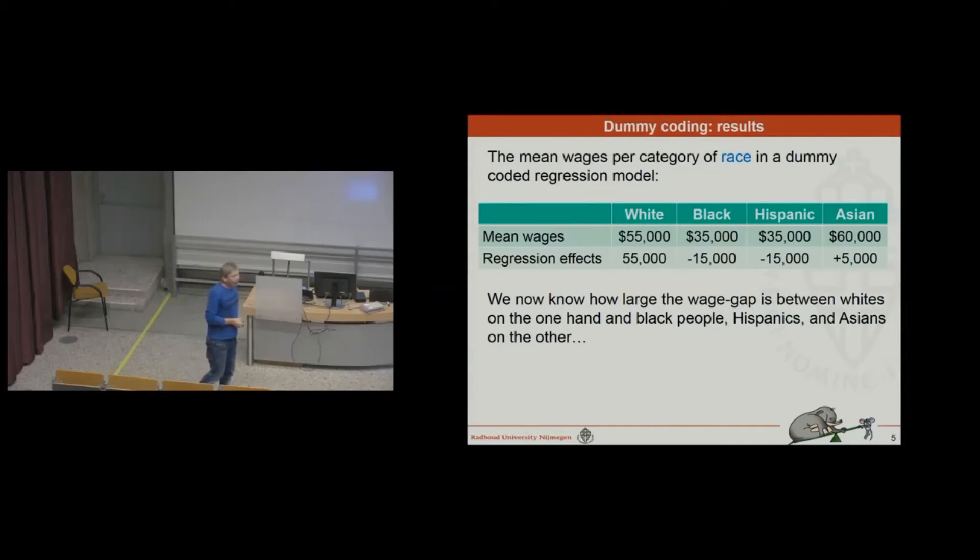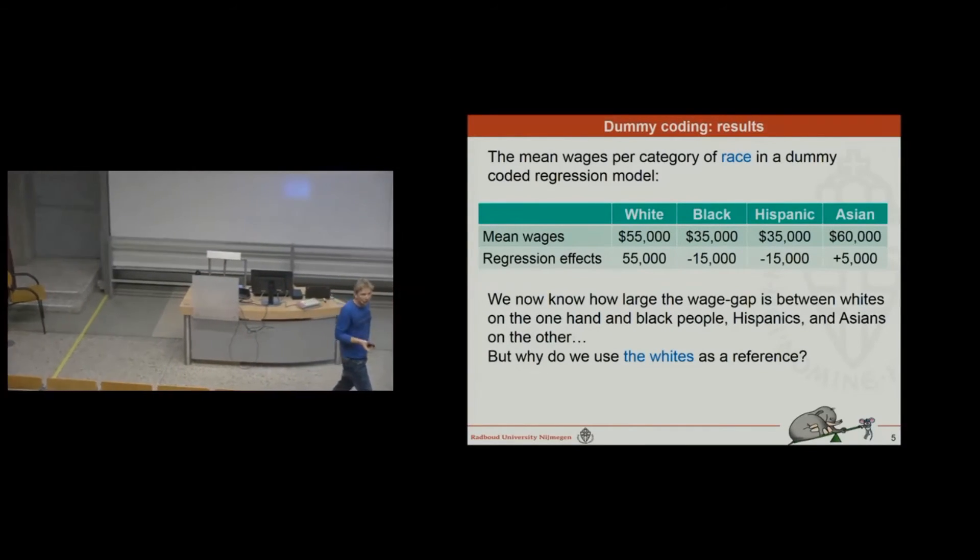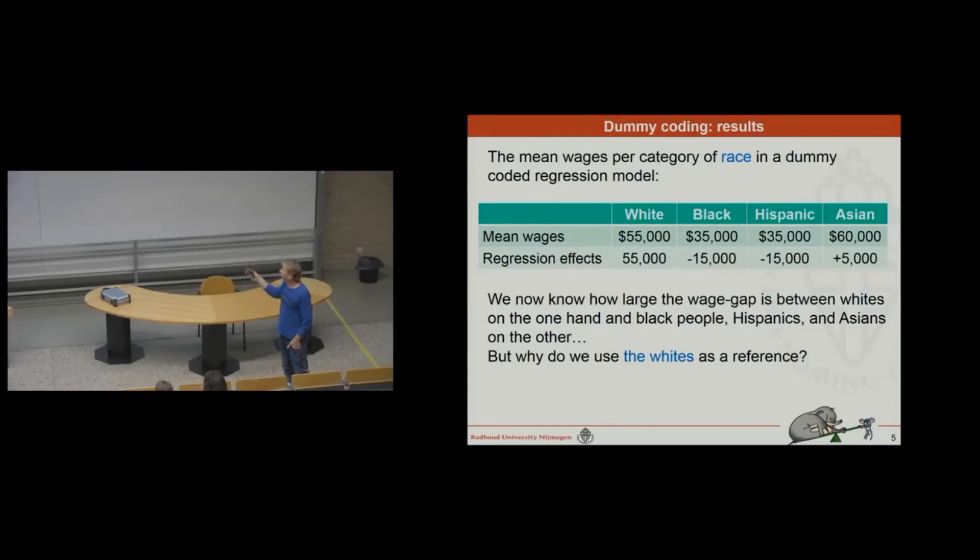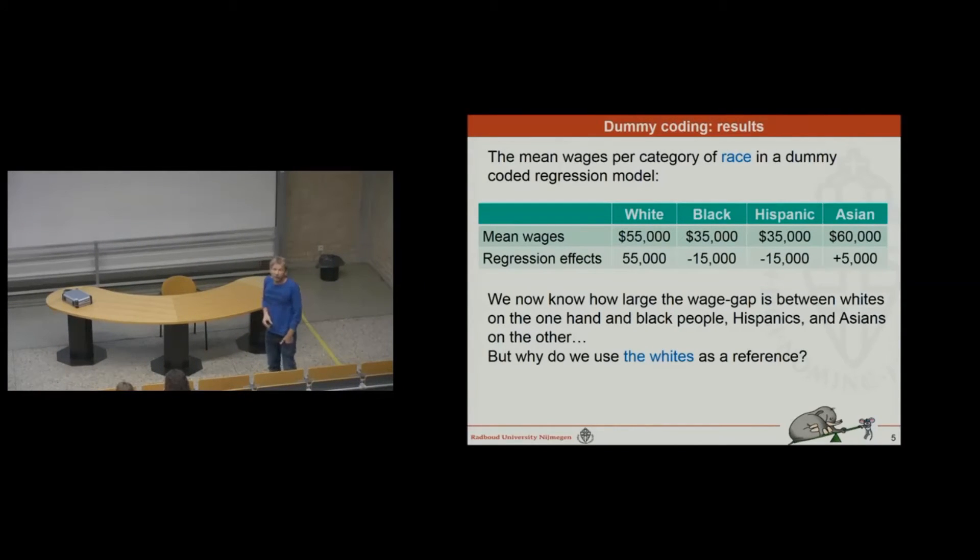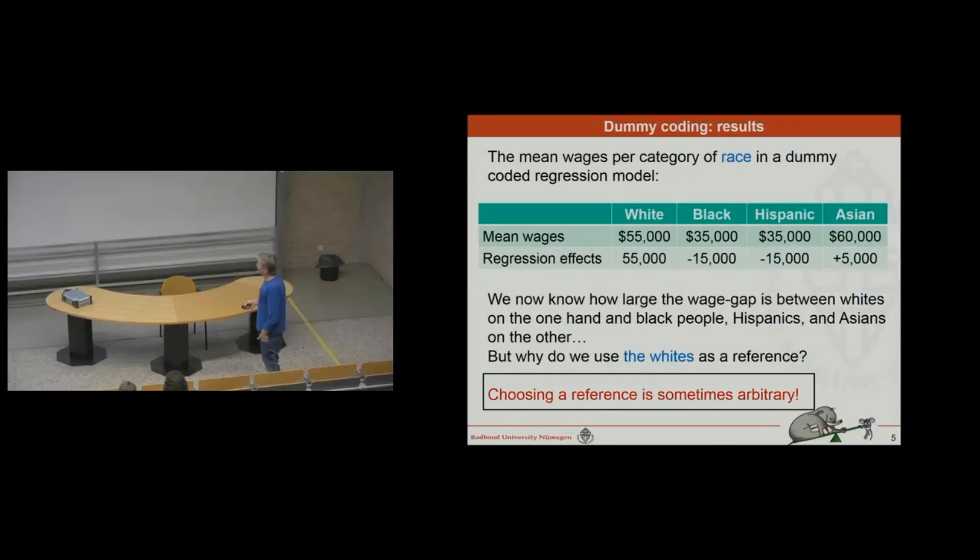Now, we know how large these wage gaps are between whites on the one hand and the other categories on the other. But the question may arise, and many students ask me this, if I explain to them dummy coding, many students ask me, why did you take whites? Why did you take that as a point of reference, and all the other coefficients are deviations from 55? Why did you do that? And I have to say that the answer is difficult. I could have taken the black population as well, or I could have taken the Asians as well. So, with dummy coding, in many cases, choosing a reference category may sometimes be arbitrary. Whether I pick the whites, blacks, Hispanics, or Asians, well, it's up for discussion.